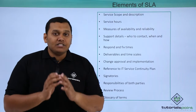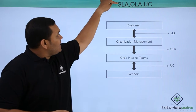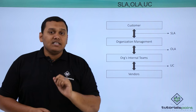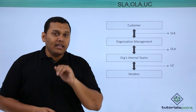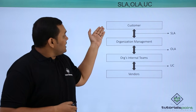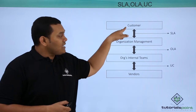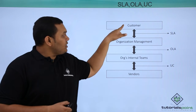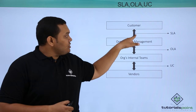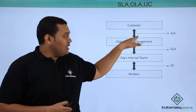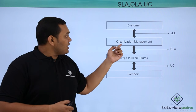Coming to the organizational structure of the SLA, you can see here SLA, OLA — service level agreement, operational level agreement, and underpinning contract, and where these lie in the process. Between the customer and the organization management we have the SLA. When a customer has an issue they raise it with the management or a service desk, and based on that the resolution SLA and response SLA come into the picture — the SLA should be met between the customer and the organization management.